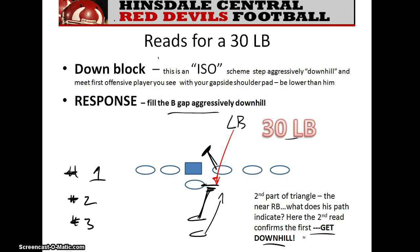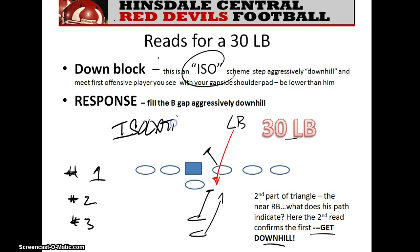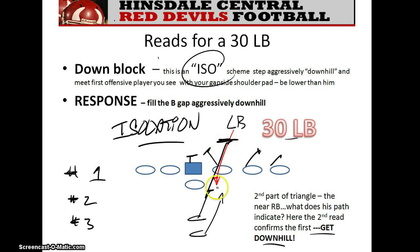This is a get-down-the-hill, dominate-the-gap response required from you as a 30 linebacker. Both reads agree that you should come downhill, so that's exactly what you do. This is also called an iso scheme — iso means isolation. It's a play popular with two-back offenses where they attempt to block everybody on the line of scrimmage except you, the play-side linebacker. The fullback is told to get up in your grill and block you, giving the back a chance to cut either way based on your response.